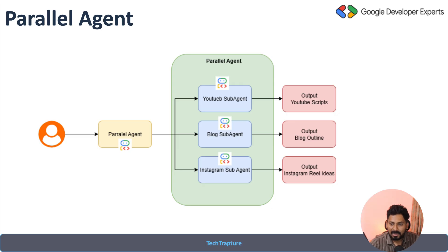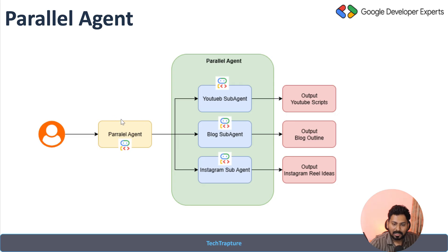First I invoke the parallel agent, which takes the user's query and sends it to all three subagents simultaneously. The YouTube subagent independently gives ideas or a YouTube script, the blog subagent gives a blog outline, and the Instagram subagent gives reel ideas — all for the same topic. One important thing: the parallel agent itself does not have LLM capabilities, but each subagent can have its own LLM, custom functions, or tools.